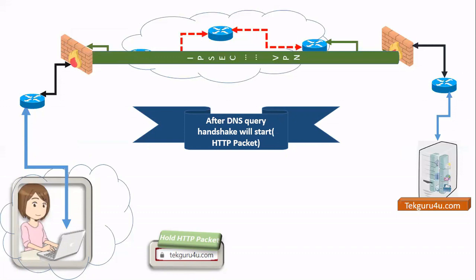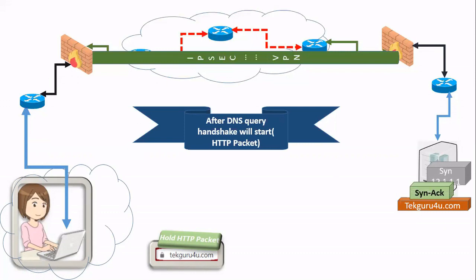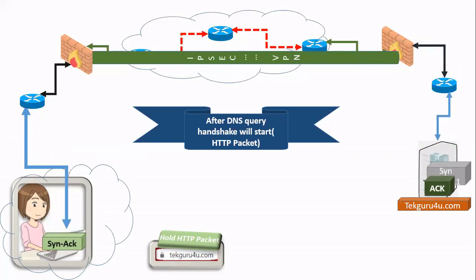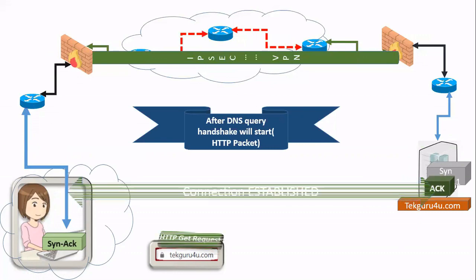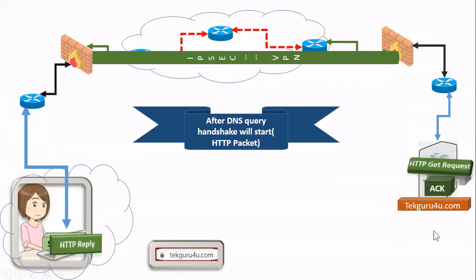Let's take an example — suppose this is an HTTP packet. Then a SYN request will go to that IP address, the server will send the SYN-ACK back to our IP address, and then an acknowledgement will go to the server. After that, the connection is established. And after that, your HTTP GET request will go and we will get the reply. This GET request was kept on hold because the three-way handshake had not happened. Three-way handshake is required to create a session — a two-way connection.